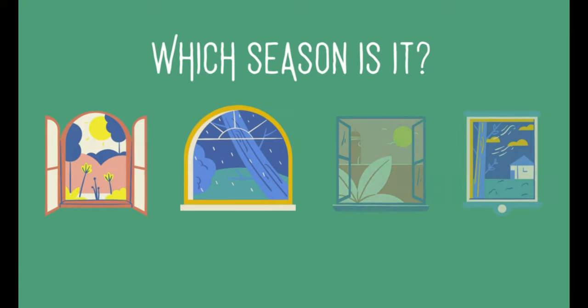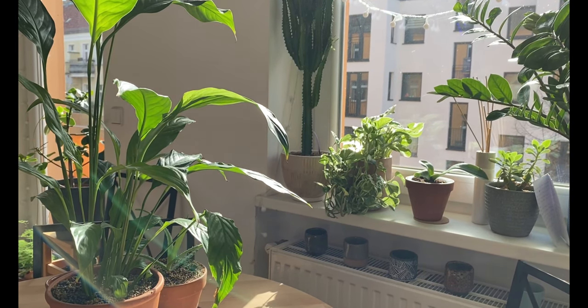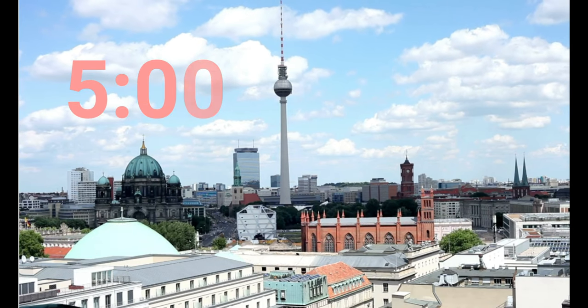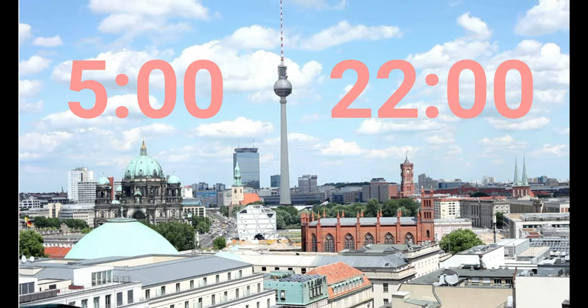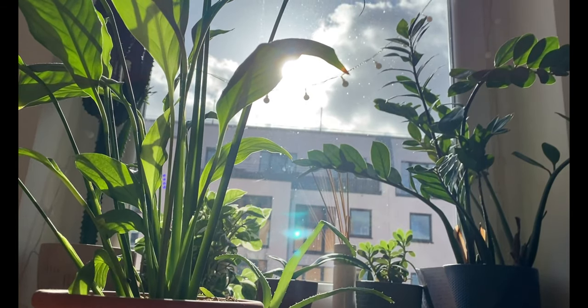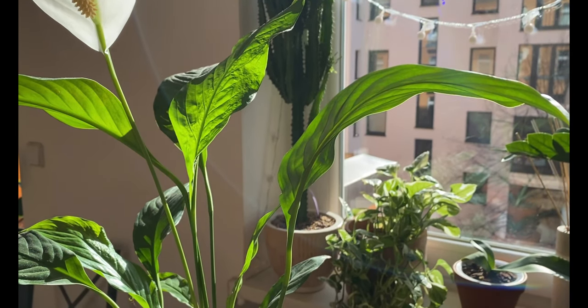Another thing to consider is which season are you in? This is very important because the intensity of sunlight will actually diminish or increase depending on what season you're in, and this is especially true if you live farther away from the equator. For example, here in Berlin in the summer we get very long days, with sunlight from 5 in the morning to 10 or 10:30 at night, and the intensity of the sunlight can be very strong.